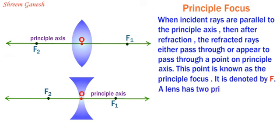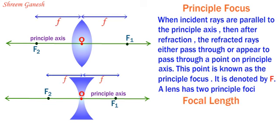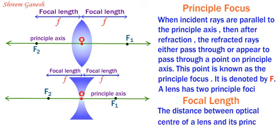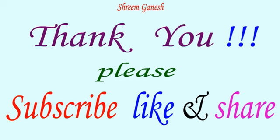A lens has two principal foci, represented by F1 and F2. Focal length: The distance between the optical center of a lens and its principal focus is known as its focal length.